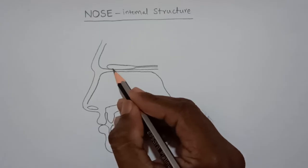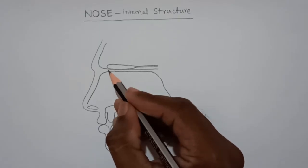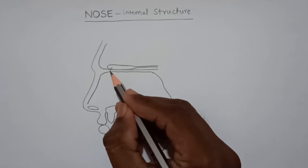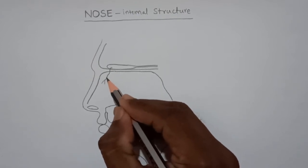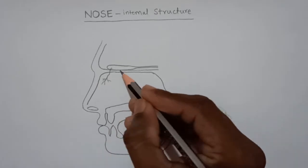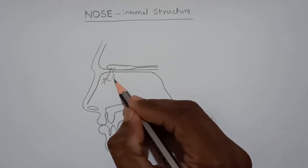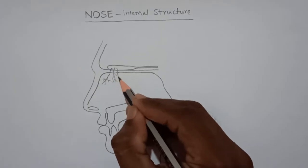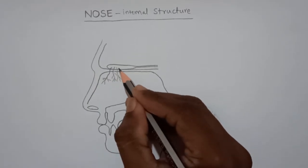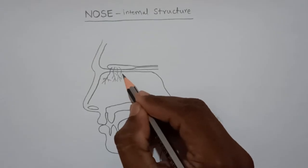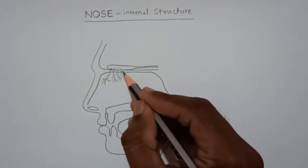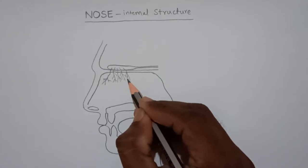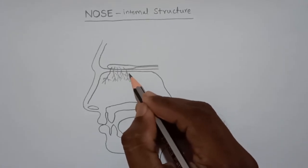And from that olfactory bulb we have to draw olfactory nerves. Olfactory nerves like this, we have to draw as much as possible, as many as possible, very fine nuclei structures we have to draw from the olfactory bulb into nasal cavity.